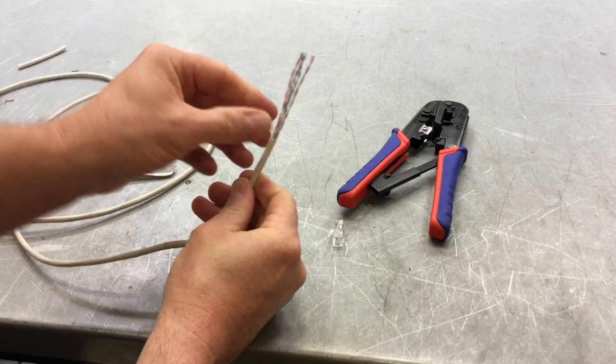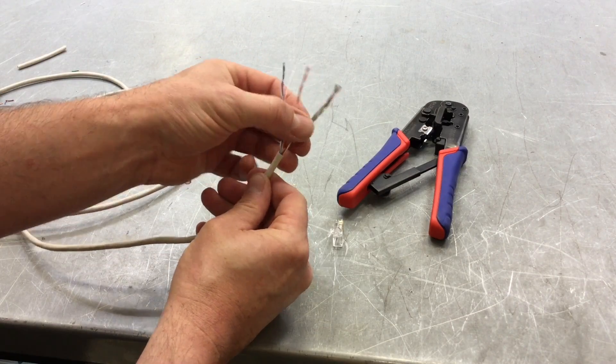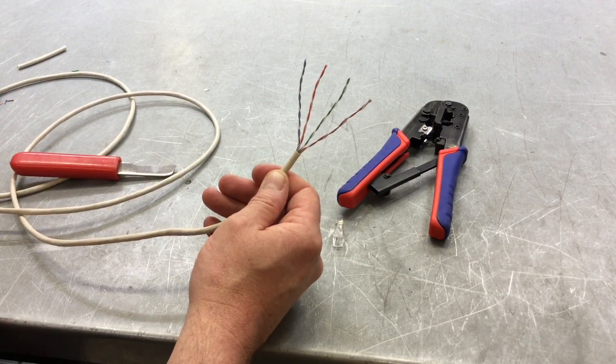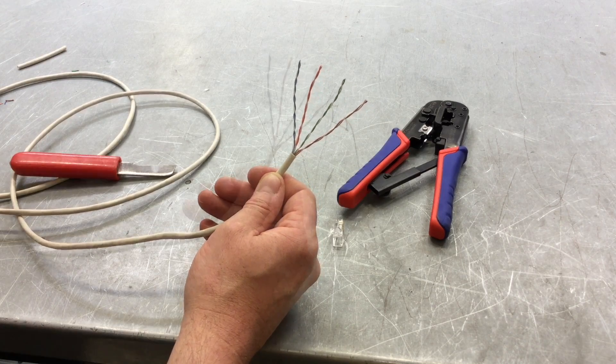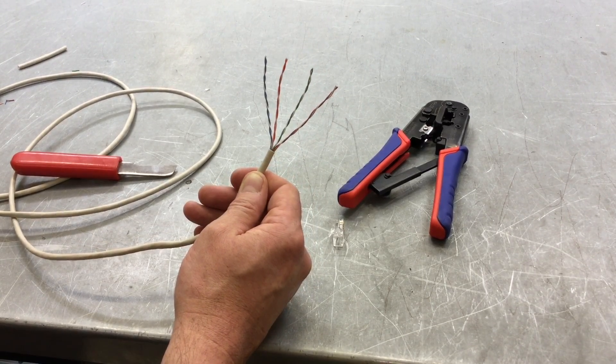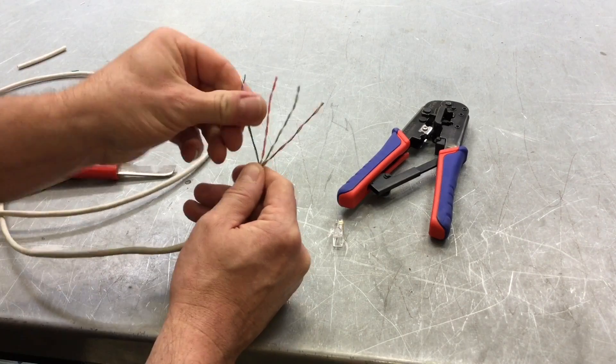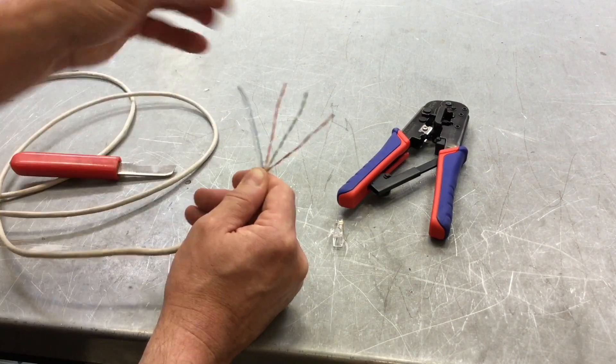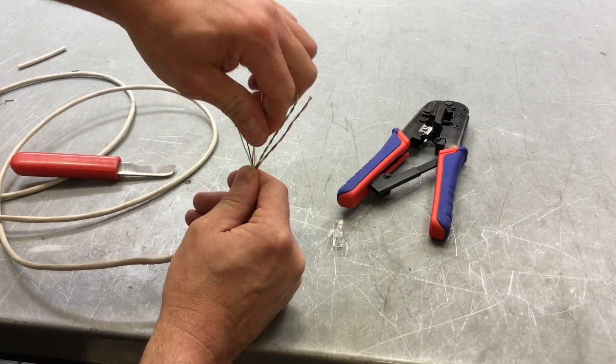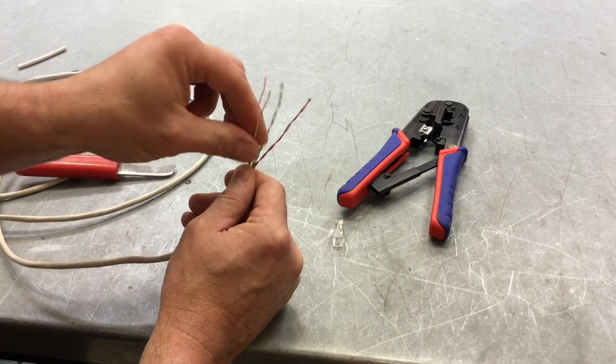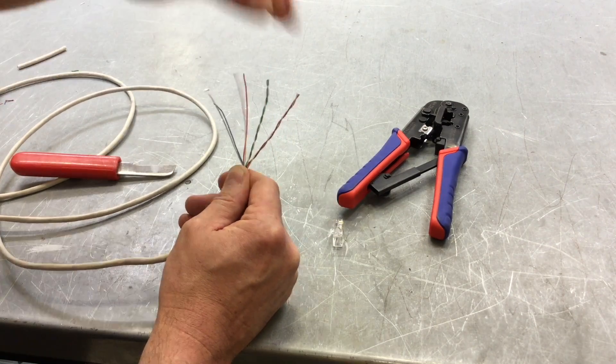Exposing the four paired conductors. So four pairs, meaning eight conductors in total but four pairs. Next I'm going to untwist them all and keep them nice and straight, so I detwist them and make sure they're nice and straight as well. So detwisting the conductors and just running my fingers through to make sure they're nice and straight.